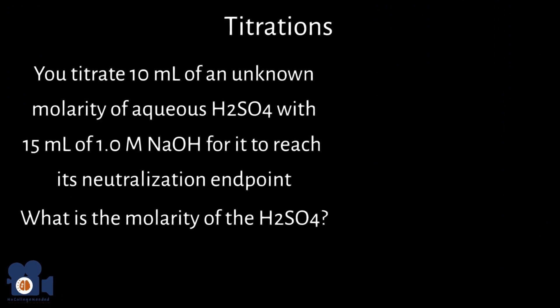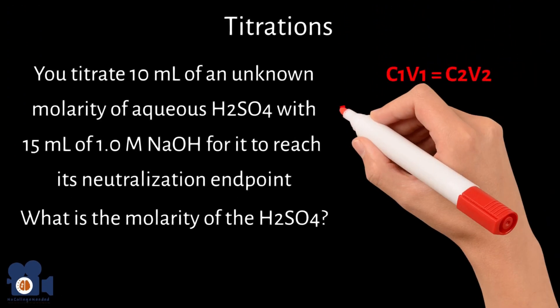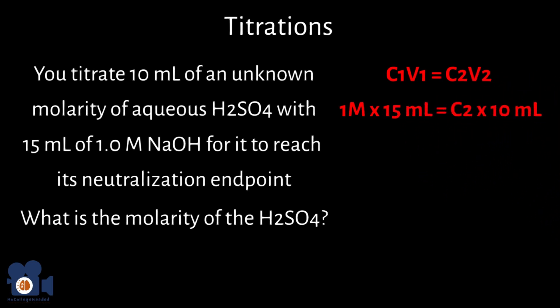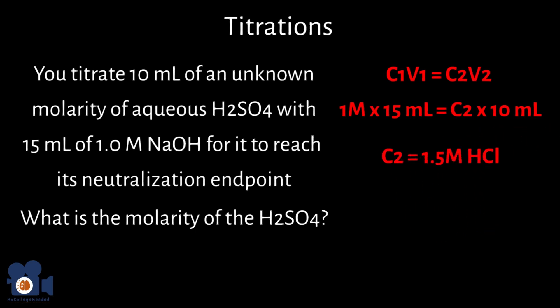Unit 4.6: using C1V1 equals C2V2 again, we get 1 molar times 15 milliliters equals C2 times 10 milliliters. Solving for C2, we get 1.5 molar HCl.